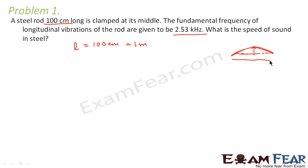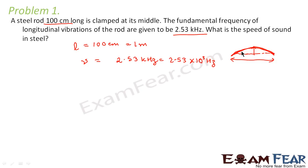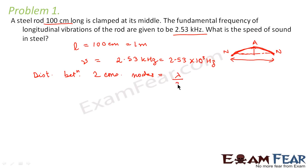So this is the length of the rod. The fundamental frequency is given as 2.53 kilohertz, that is equal to 2.53 × 10³ hertz. When we look at this kind of system, nodes are formed at both ends and antinodes are formed in the middle. The distance between two consecutive nodes is always equal to half a wavelength, that is lambda by 2.